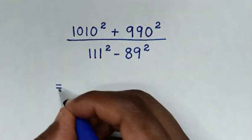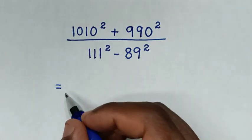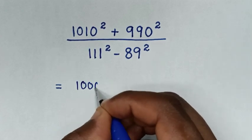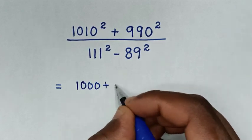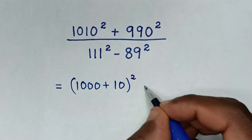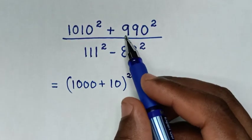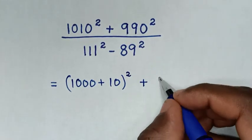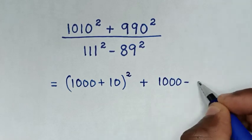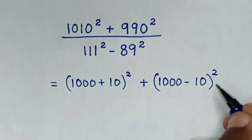It will be equal to: from this, 1010 is the same as 1000 plus 10, then bracket square, then plus 990 is the same as 1000 minus 10, then bracket square,